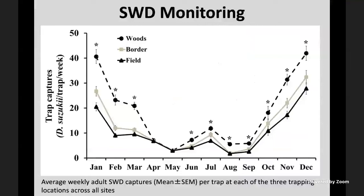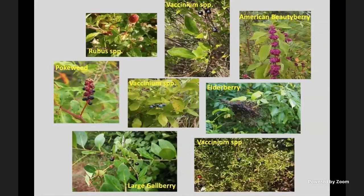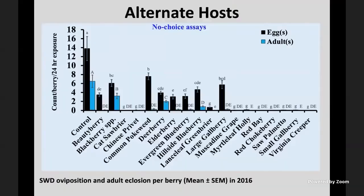Monitoring in Georgia blueberries over several years showed that flies are active year-round — they don't slow down in winter. More interestingly, numbers were higher in wooded areas nearby than in the fields themselves for most of the year, indicating alternative host plants in the woods. Looking at the understory species, SWD females were able to lay eggs and complete development in many of those wild plants, suggesting we need to address those alternative hosts for long-term management.